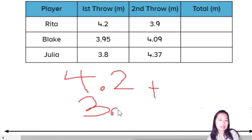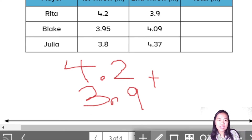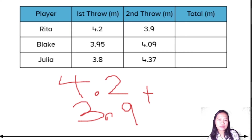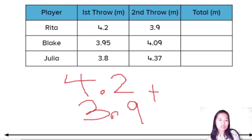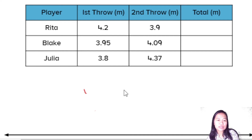You can use a number line. How do you do it? Use the number line. We start at 4.2 — we can do it on the number line.